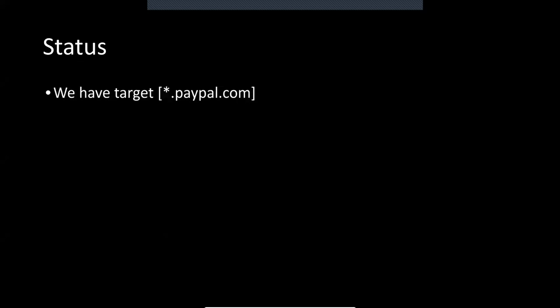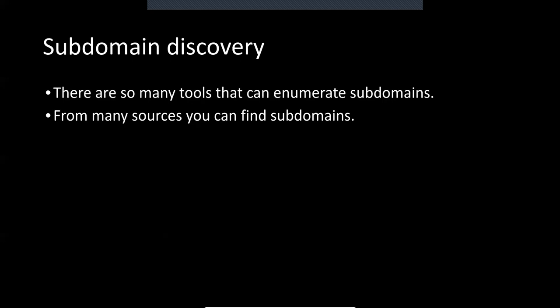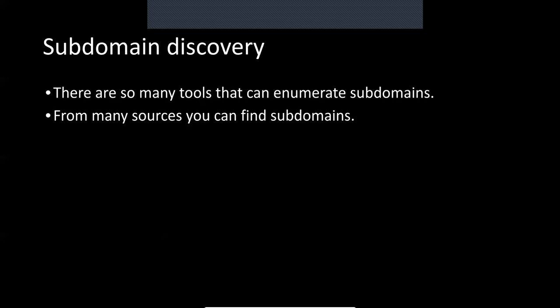Our target is wildcard.paypal.com. I need to find multiple subdomains of paypal.com. PayPal.com may have third or fourth layer subdomains. For example, paypal.com has www.paypal.com as the second layer. A third layer would be something like xyz.xyz.paypal.com. This is how subdomain layering works.